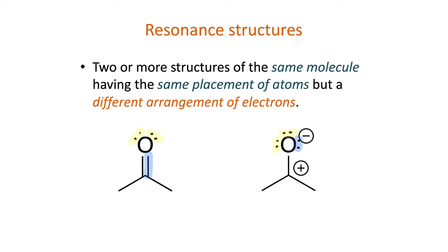I can draw a curved arrow to describe that change in electron configuration. As a result of the change, we have a negative one formal charge on the oxygen atom, and a plus one formal charge on the central carbon atom.